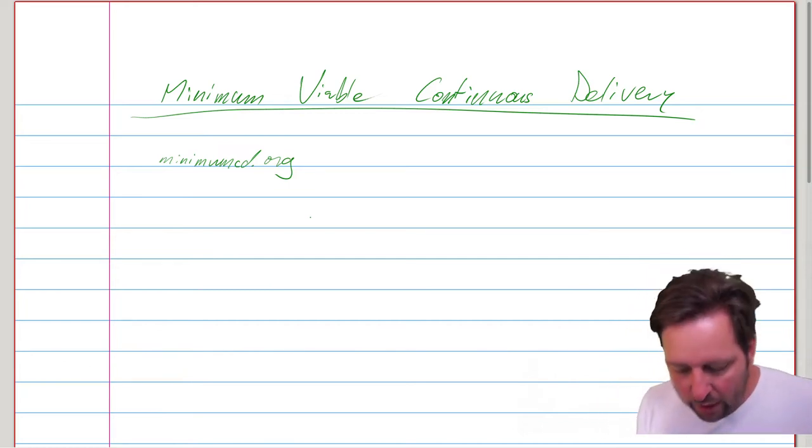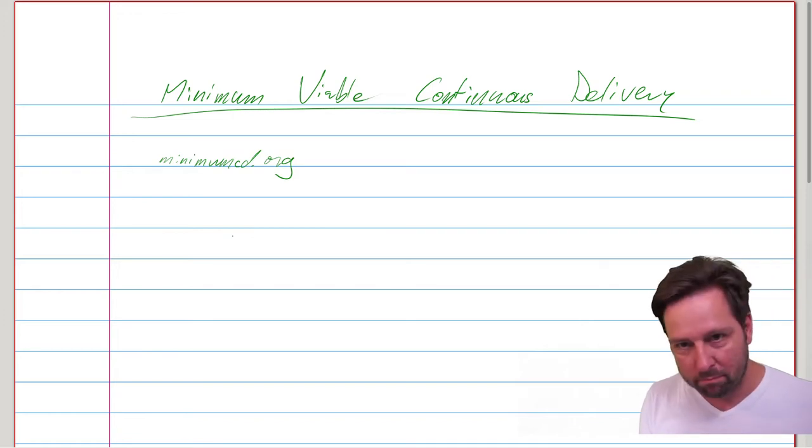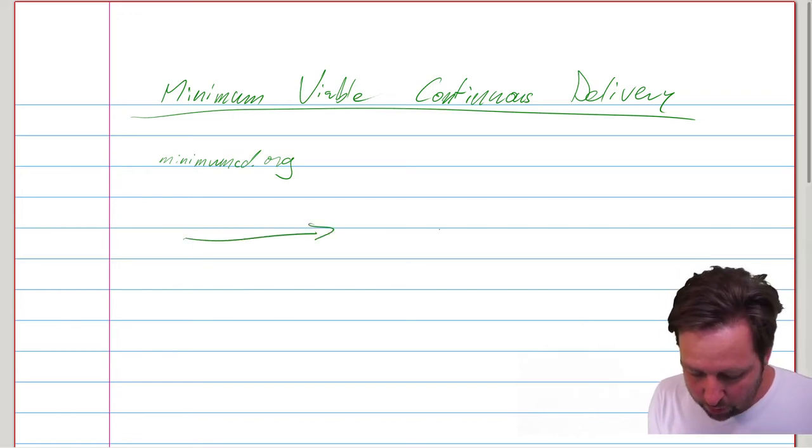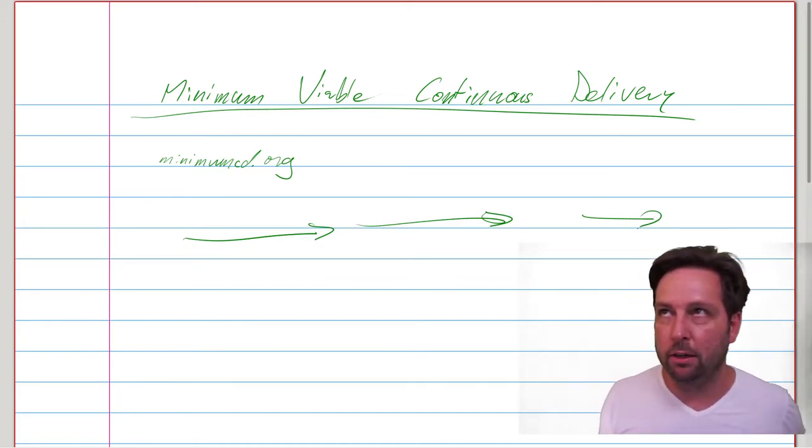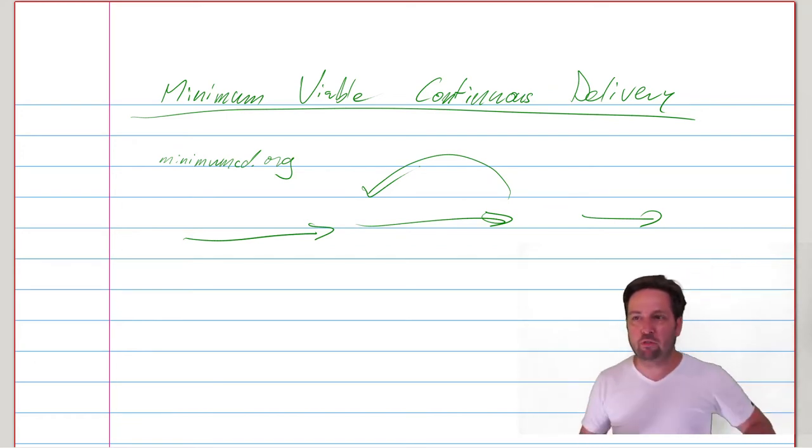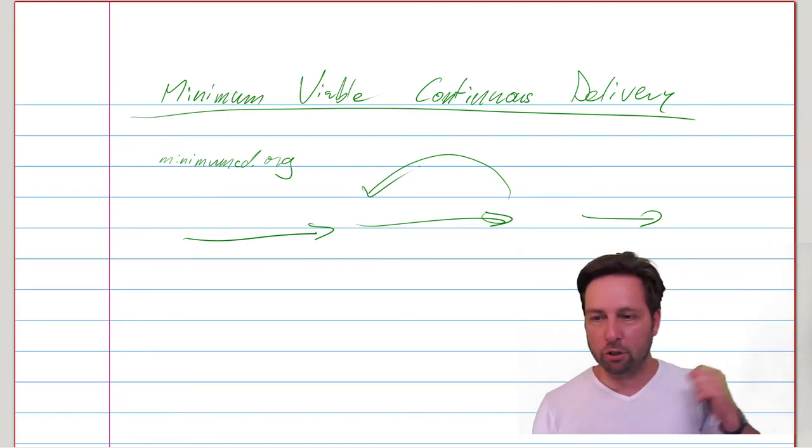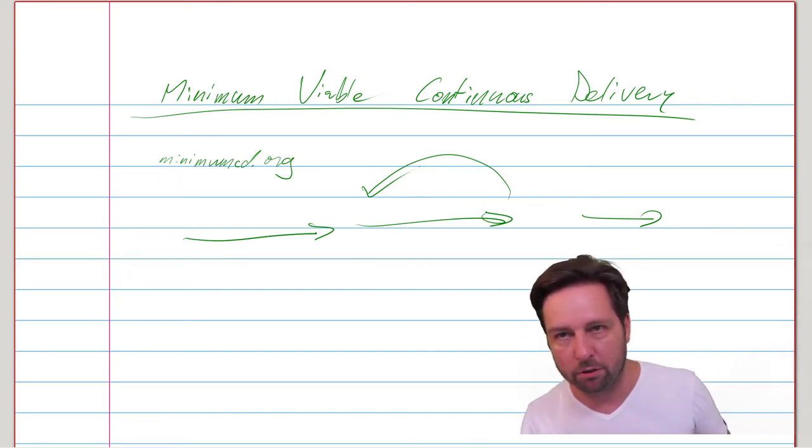But what it really amounts to is if you follow the suggestions of this website, you really set yourself up to speed up in the forward direction, but even more importantly, build feedback loops that you can trust. I think this is the crucial point of minimum viable continuous delivery.